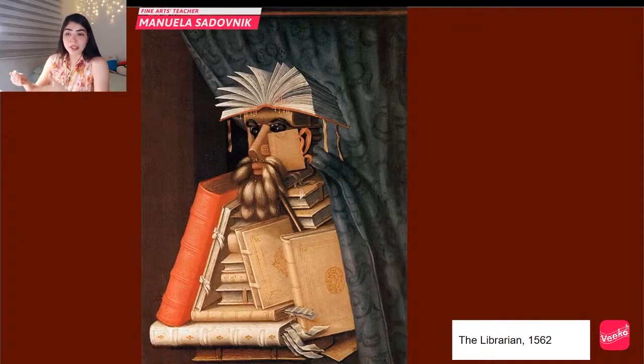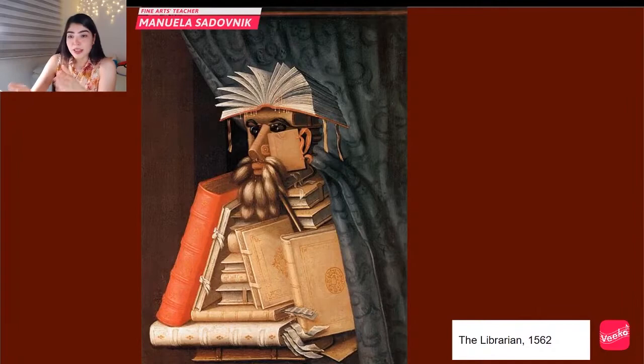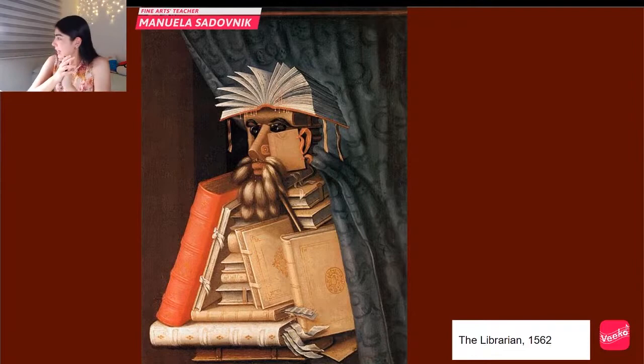He had the ability to work not only with food but also with objects like books, as you can see here. He was working for the court in Prague, and this is part of his series depicting members of the emperor's entourage. This one is 'The Librarian,' 1562 — he's made entirely out of books.